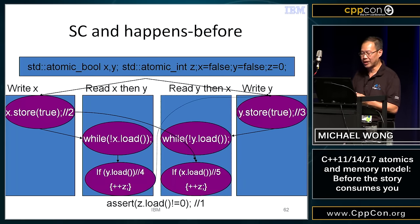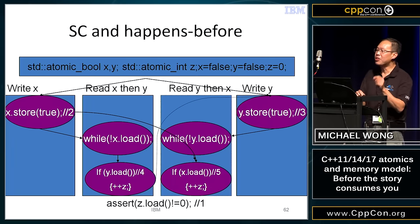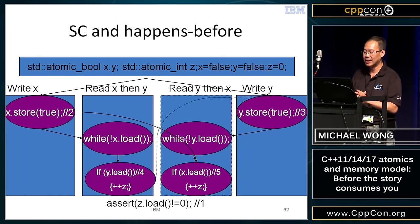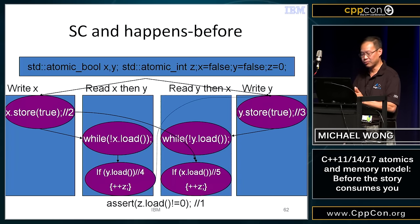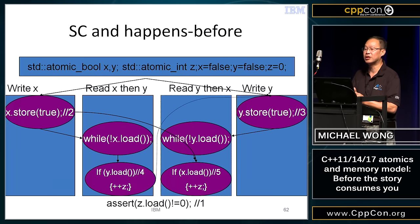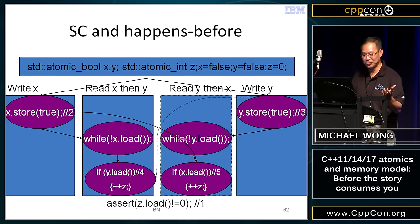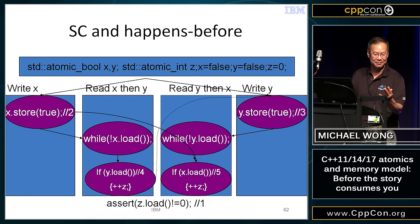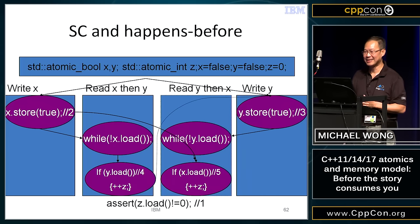The semantics of sequential consistency require a single total order over all operations tagged with SC ordering. There's an implied ordering relationship between a load of Y returning false and the store of Y. For there to be a single total order, if one thread sees X equals true and subsequently sees Y as false, this implies the store to X occurred before the store to Y. Because everything is symmetrical, it could also happen the other way. In both cases, Z is going to be one. And of course both loads could return true, making Z equal two, but there's no possibility of Z being zero.